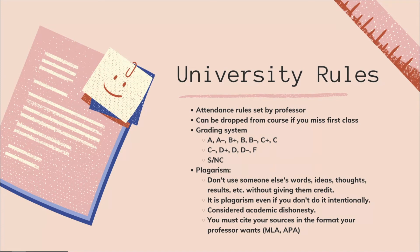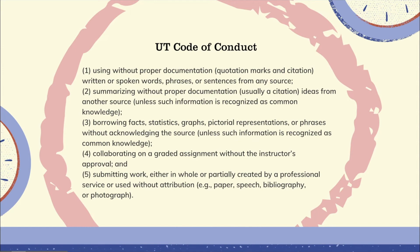Plagiarism is when you use someone else's words, ideas, thoughts, or results without giving them credit, and this is taken very seriously in the United States. Even if you don't do it intentionally you can still get in trouble — it's considered academic dishonesty. If caught, you can be suspended from the university or receive no credit or an F in your class. You must cite your sources in the format your professor wants, whether that's MLA, APA, or any other format. I wanted to show you exactly what the university considers plagiarism from the UT Code of Conduct.